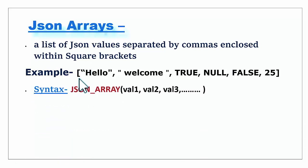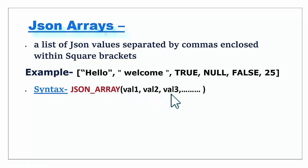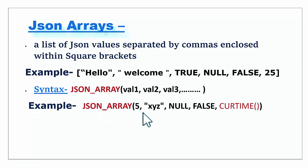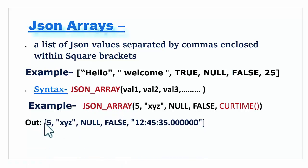We can also create a JSON array using the JSON_ARRAY function. Inside the round brackets, we give a list of values like value 1, 2, 3 separated by commas. Here is an example listing a number, string, NULL, Boolean, and a function. If we execute it, it will give us the same result — a JSON array enclosed within square brackets. You can see the CURTIME function shows the current time in the output.